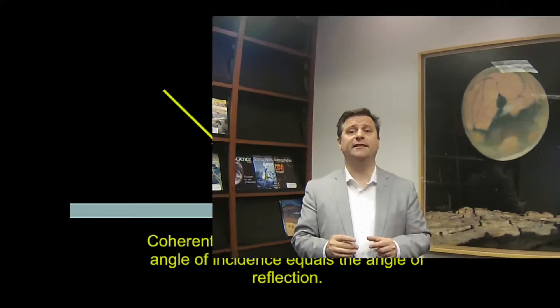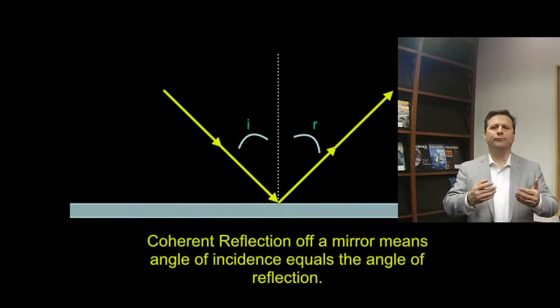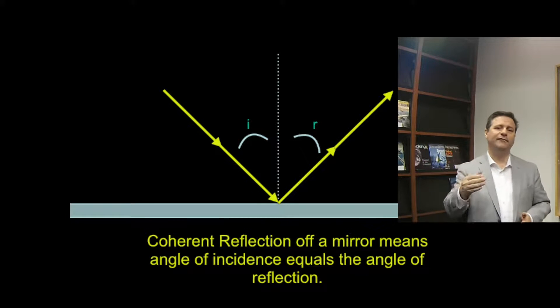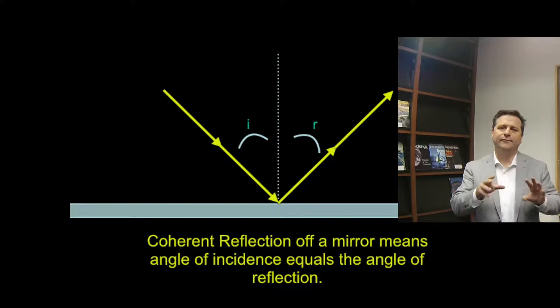Let's go way back in time to 300 BC, where the great Greek philosopher Euclid, in all of his work, also discussed the nature of reflection. He observed that light reflects off surfaces, and posited that the angle of reflection equals the angle of incidence — like throwing a ball against a wall at an angle. This led Euclid to think that light might act like a particle, because it bounces off surfaces as a particle does.